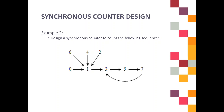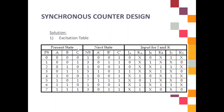Based on this example, we move to our first step, which is to derive the excitation table. Because in your transition state diagram, the largest value is 7. So when you convert 7 in binary, you need to have at least three variables. 7 in binary is 1, 1, 1. That's why you need to have three variables.